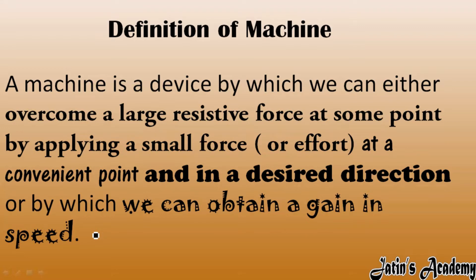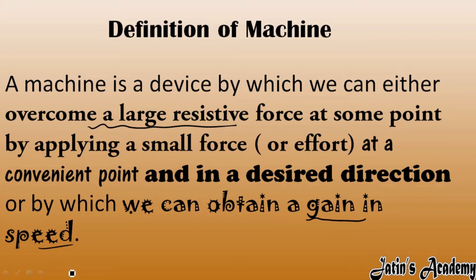Now carefully listen — all these functions cannot be obtained from one machine at the same time. For example, if we are overcoming a large resistive force and also gaining speed from a machine, these two things are not possible simultaneously. A machine can do these types of work, but not at the same time.